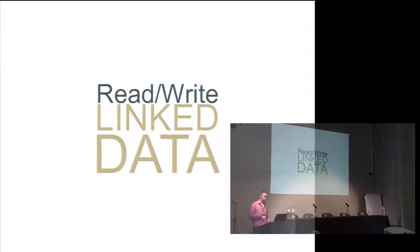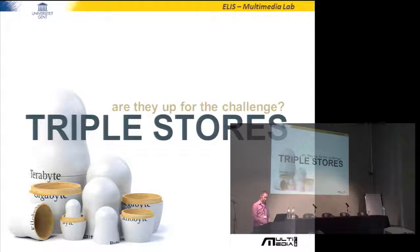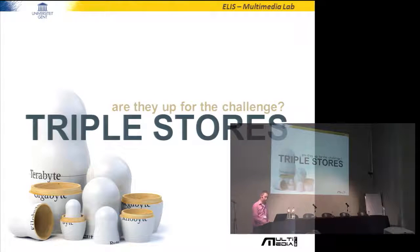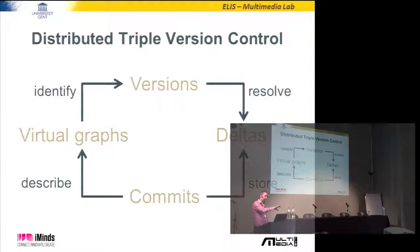Before you can write, you have to think about ownership, provenance, versioning, and whether the current triple stores are up to it. We don't think so, so we came up with a solution. We have a complete distributed triple version control system, like git. Whenever we commit something, it is stored as a delta, but it's described as a virtual graph. This virtual graph identifies a version, and a version resolves a delta.